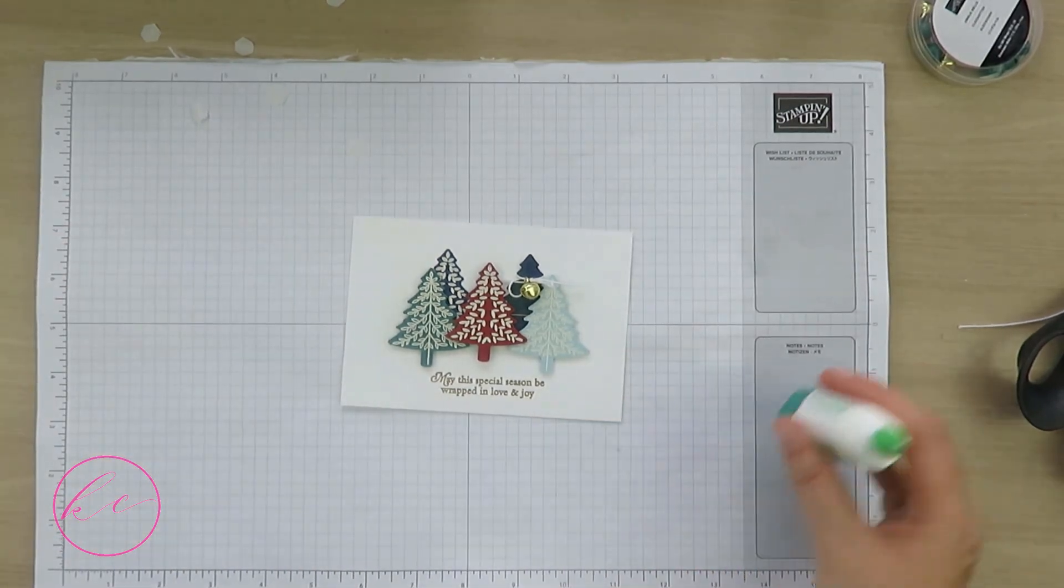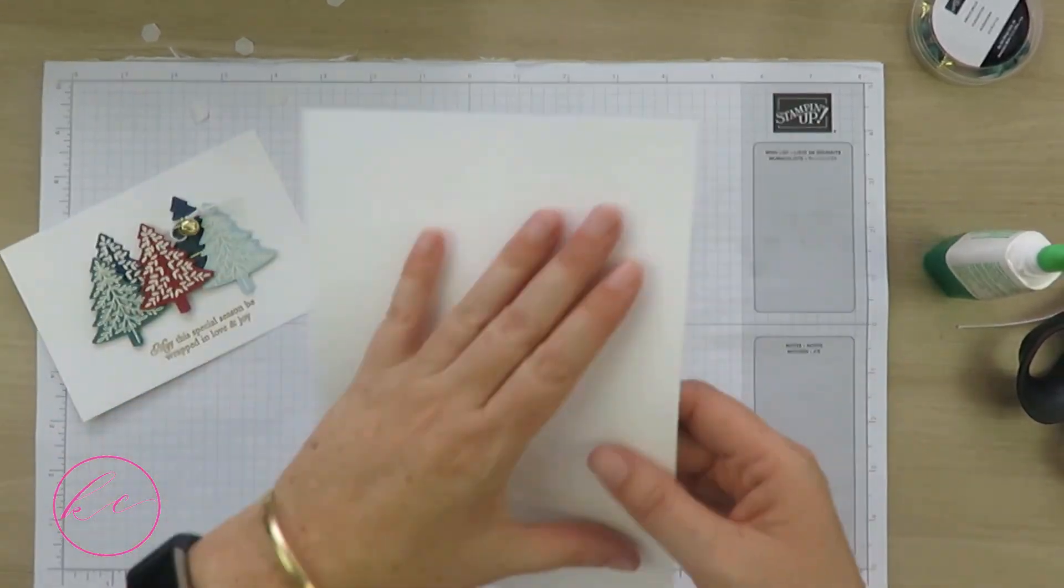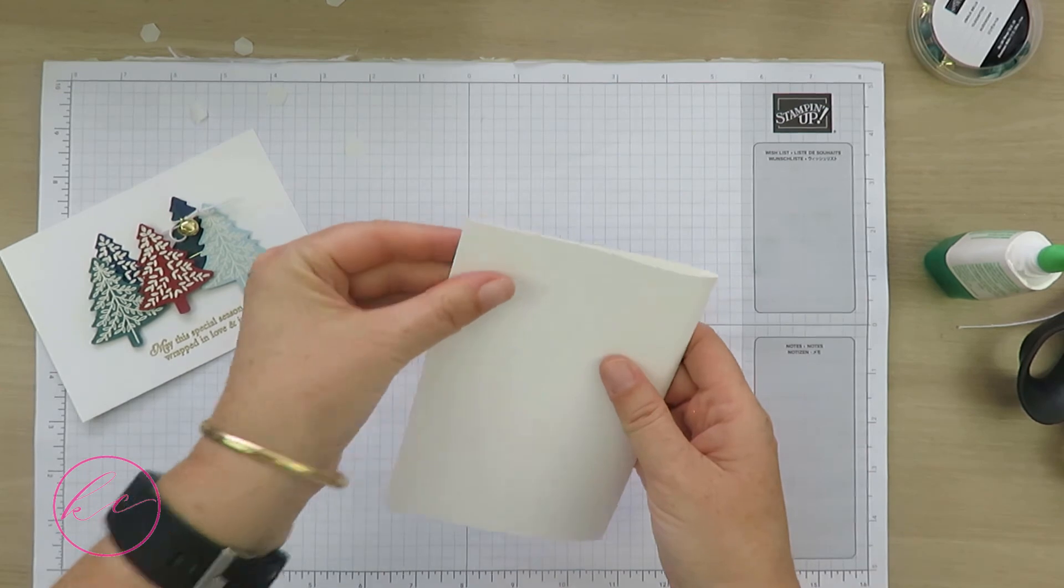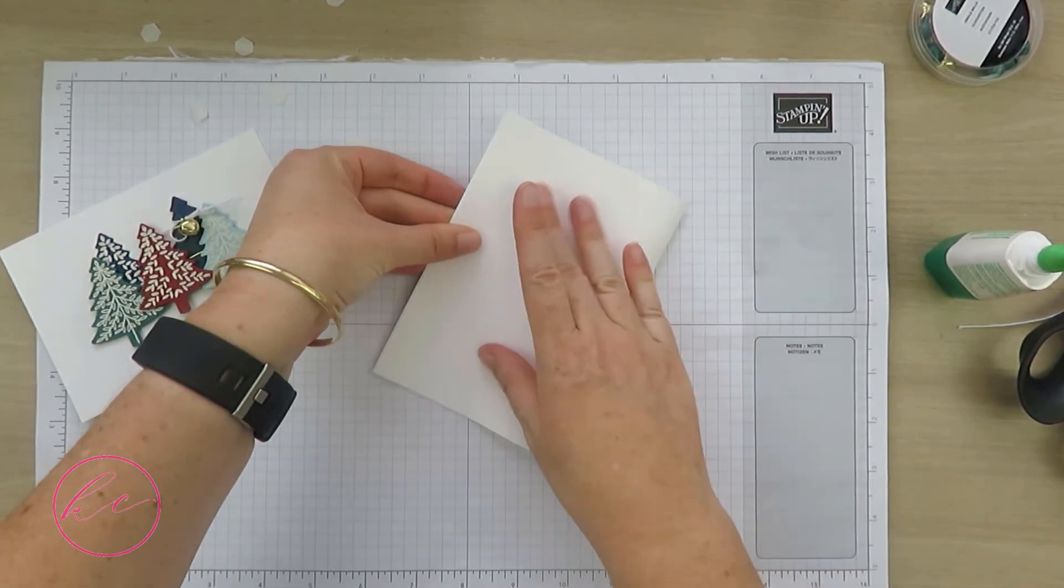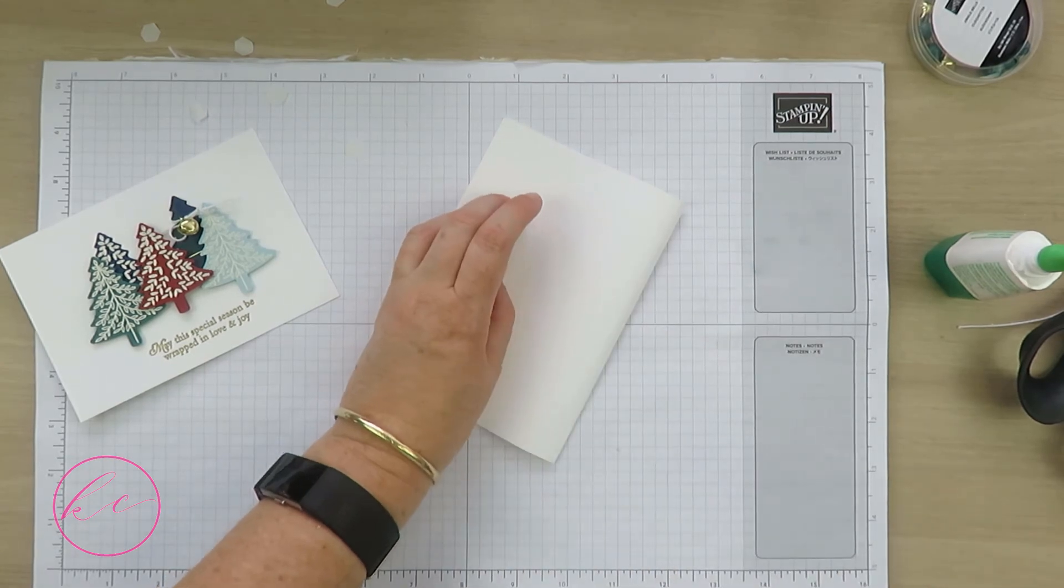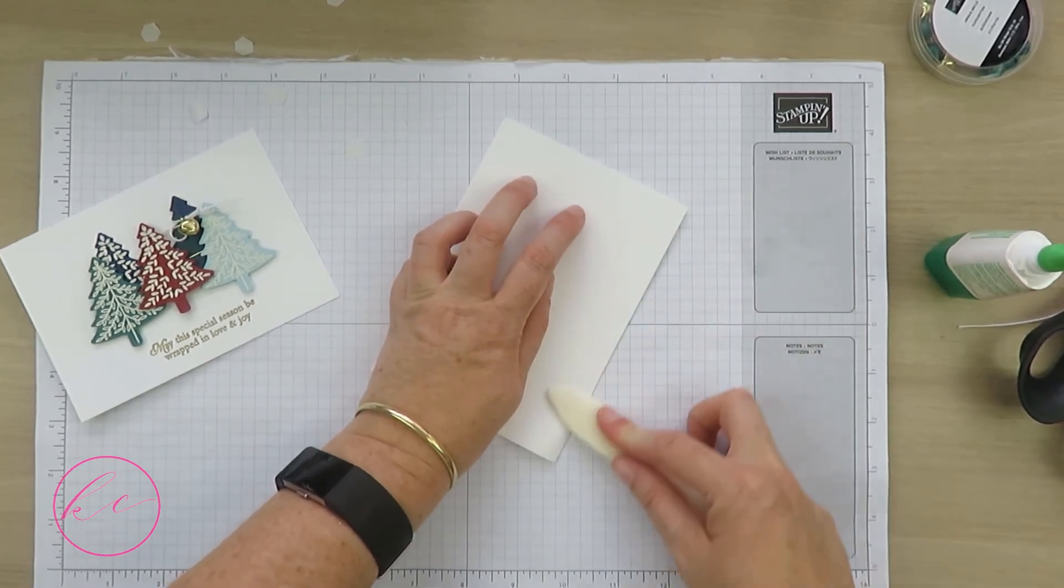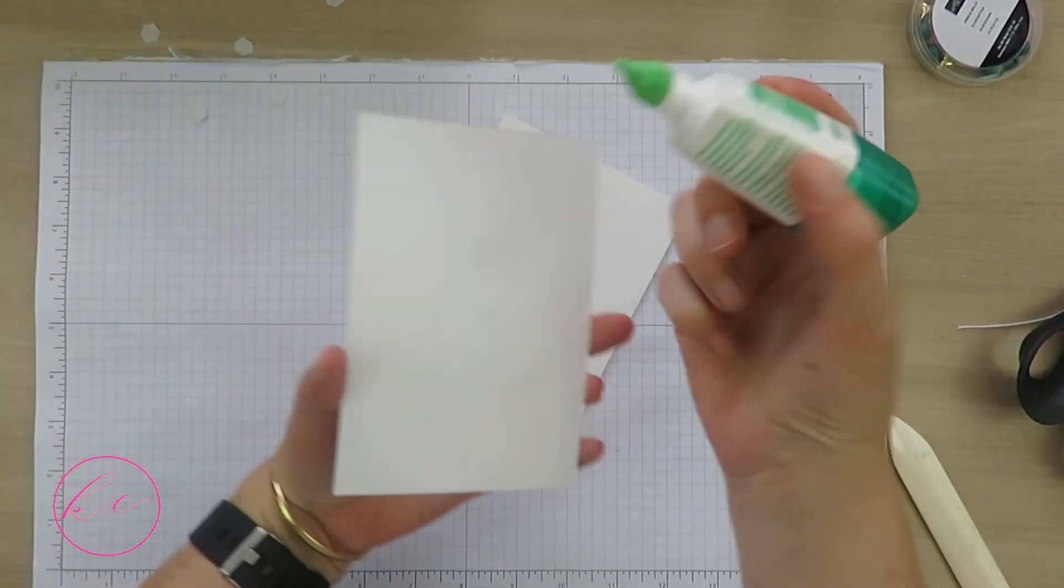Then we can simply add this to our card base, which is a standard size card base made of thick Whisper White cardstock. I've scored that in half at the ten and a half centimeter line, and we can now stick this down.